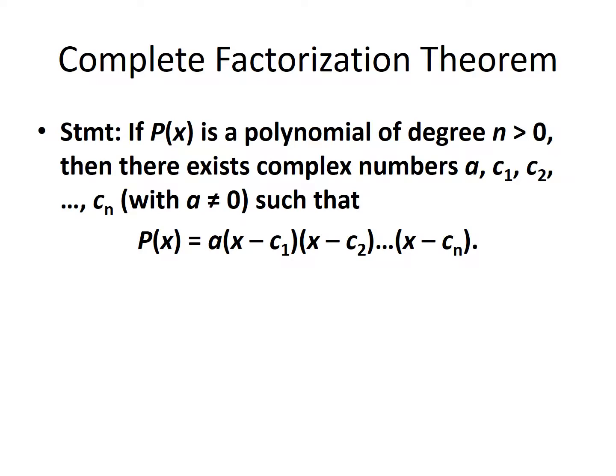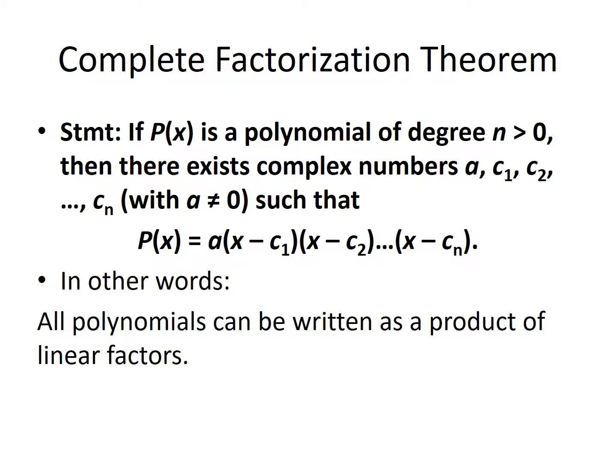The complete factorization theorem: if a polynomial p of x has a degree greater than 0, then there exist complex numbers a, c1, c2, all the way up to cn, with a not equal to 0, such that p of x equals a times the quantity x minus c1 times the quantity x minus c2, all the way up to x minus cn. In other words, all polynomials can be written as a product of linear factors.